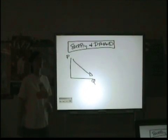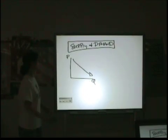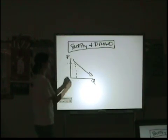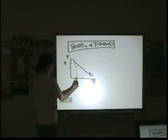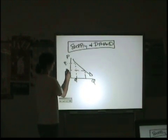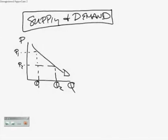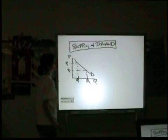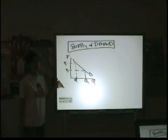Demand slopes down because at higher prices, people demand lower quantities. At lower prices, people demand higher quantities. That's human nature. You want to buy more stuff cheaper.